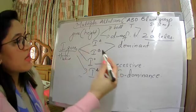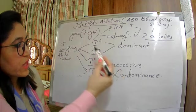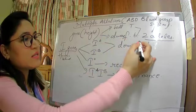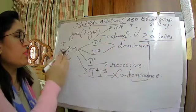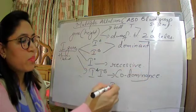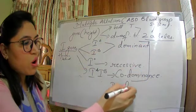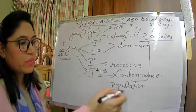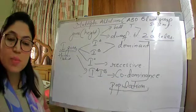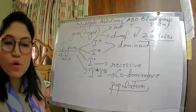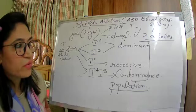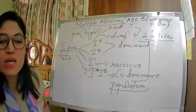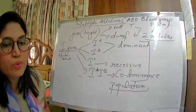A and B are dominant, O blood group is recessive, and if a person has blood group AB, that is a situation of co-dominance because both dominant alleles have expressed themselves. All the alleles responsible for the blood group are present in a population, so four persons standing in front of you can have different blood groups: A, B, O, and AB.